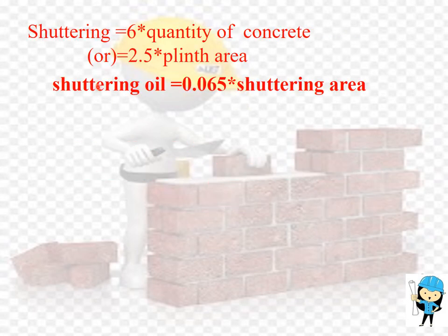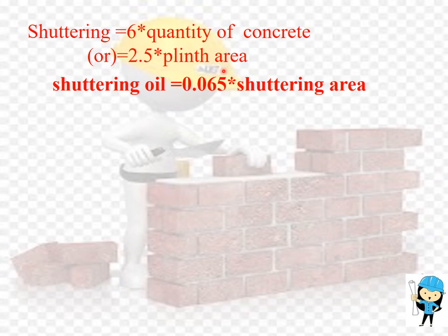Now we are going to calculate the shuttering work. The shuttering work is calculated by the formula: 6 times the quantity of concrete, or 2.5 times the plinth area. For example, we have taken the plinth area as 6 m². The shuttering work is calculated as 2.5 × 6 = 15 m². So the shuttering work is equal to 15 m².